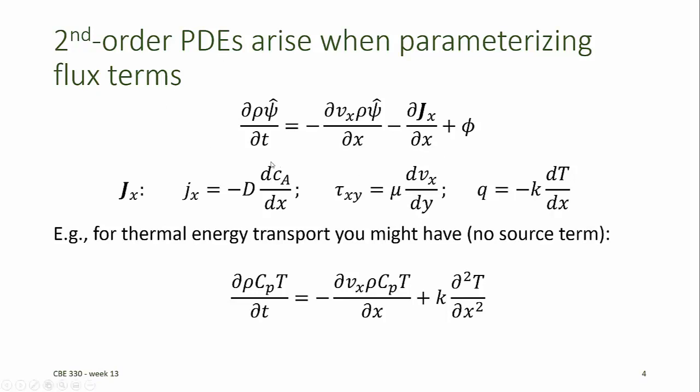If ρψ-hat is a concentration of component A, for example, then capital J sub x, the flux term, might be related to a diffusion coefficient times a gradient in concentration. Since that gradient is a derivative in x, when we substitute J into dJ/dx, we get a second derivative.